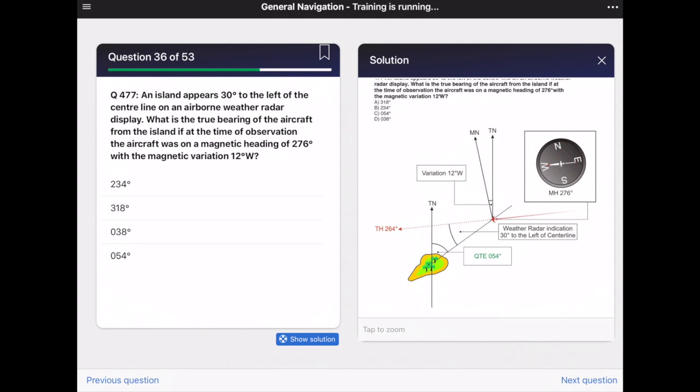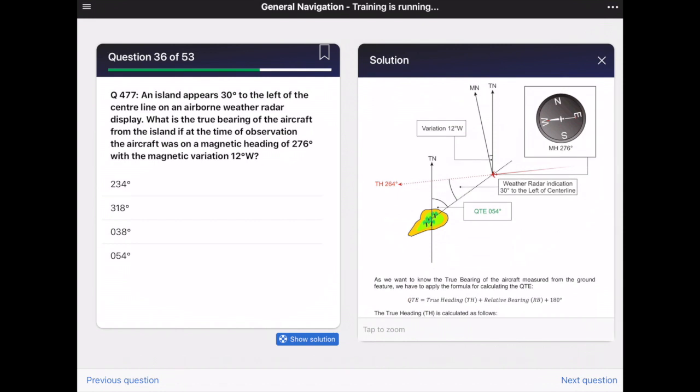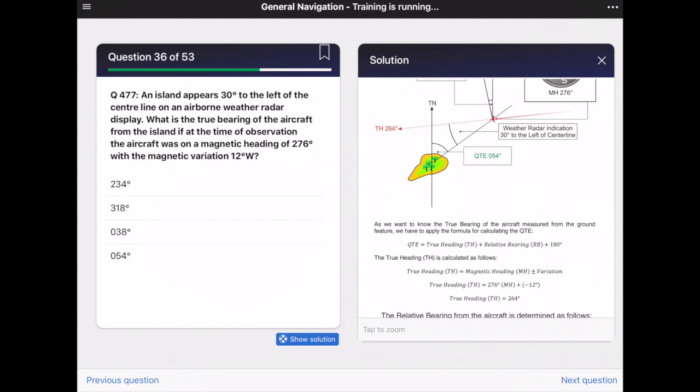As we want to know the true bearing of the aircraft, we want to know the QTE. And the formula for the QTE is the true heading plus the relative bearing plus 180 degrees.